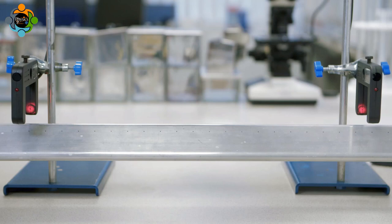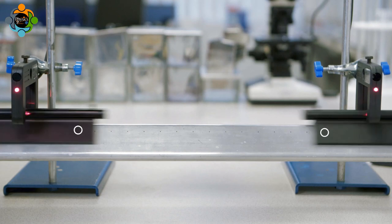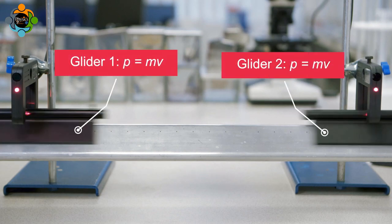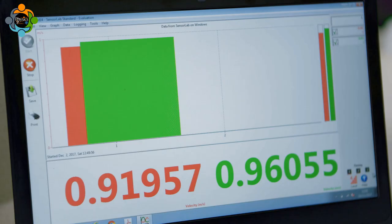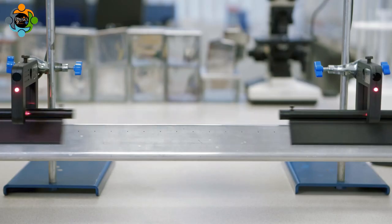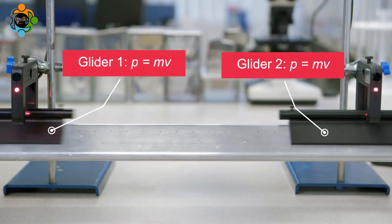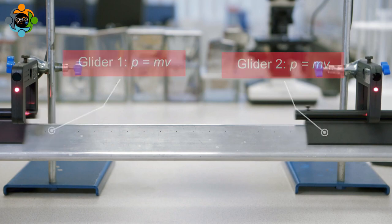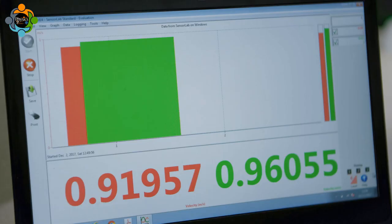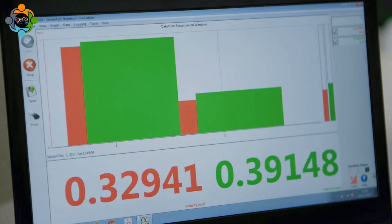The total momentum is calculated before and after the collision. The total momentum before the collision is equal to the total momentum after the collision. Momentum is conserved in elastic collisions.